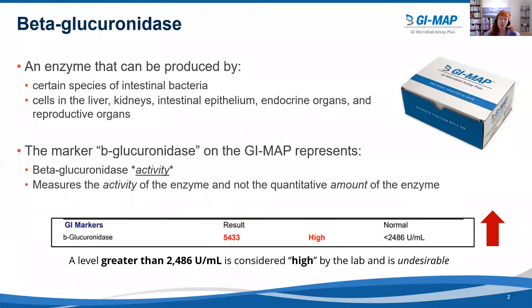So first of all, what is beta-glucuronidase? Beta-glucuronidase is an enzyme that can be produced by certain species of intestinal bacteria and cells in the liver, kidneys, intestinal epithelium, endocrine organs, and reproductive organs. The marker beta-glucuronidase on the GI MAP test represents beta-glucuronidase activity — so it's measuring the activity of the enzyme and not the quantitative amount of the enzyme.